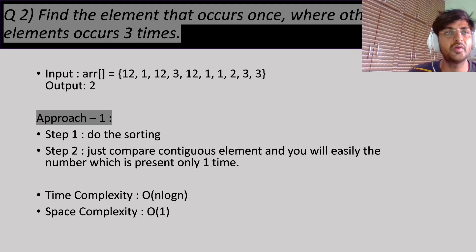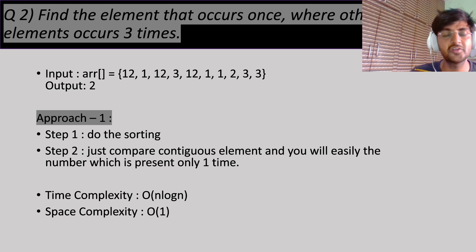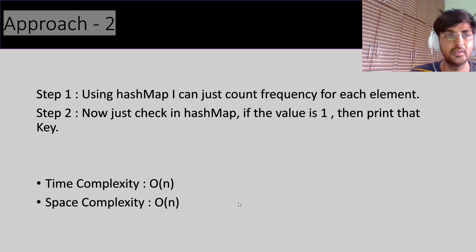Now the second, more important question: in the previous question every element appeared two times except one. In this question, every other element appears three times except one element which is present only one time. How do we find that number? We can apply sorting — O(n log n) time, O(1) space — or a HashMap — O(n) time, O(n) space. Can we optimize further?